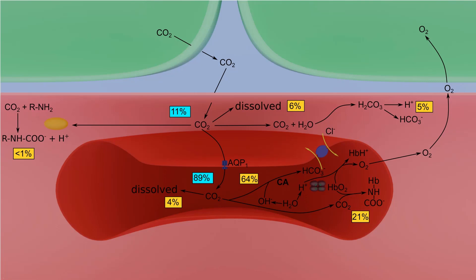Bicarbonate ions leave the erythrocyte for plasma through the anion exchanger, also called the chloride-bicarbonate exchanger. In exchange for a bicarbonate ion, a chloride ion enters. The membrane of each erythrocyte contains about a million copies of this exchanger. Such movement of chloride ions into the erythrocyte is referred to as the chloride shift.